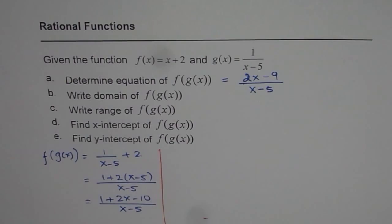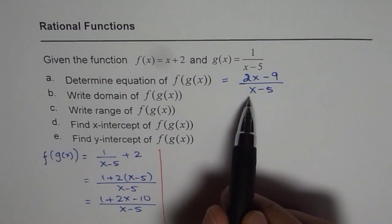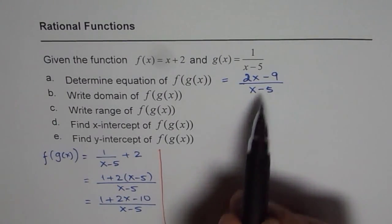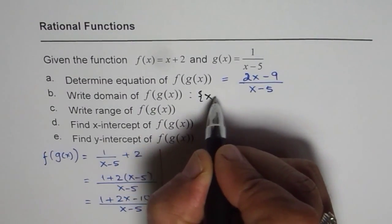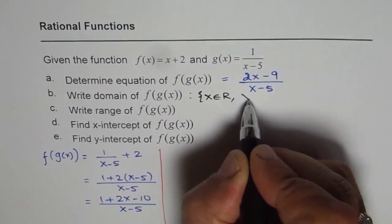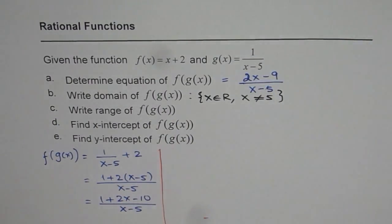Now the second part is write domain of this function. Domain is all real numbers except the denominator cannot be 0. So the domain of this function is x belongs to real numbers where x is not equal to 5, since we will have a vertical asymptote at x equals 5. That's a restriction.